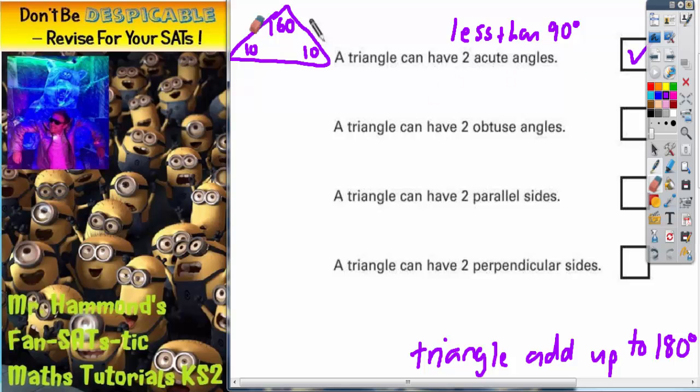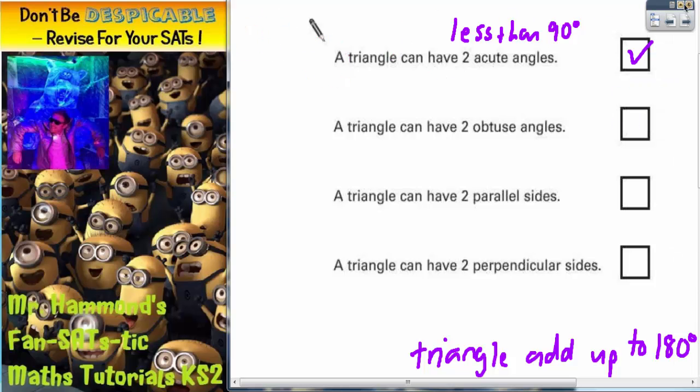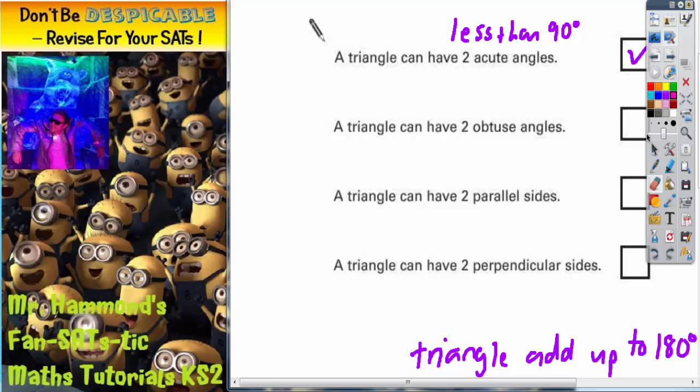That isn't the only correct answer. There are others. But as I said, we only need one answer. Just to illustrate that there are others, we could have said 20 and 20. That makes 40, so this would have needed to be 140. That also has two acute angles, but we only need one example.